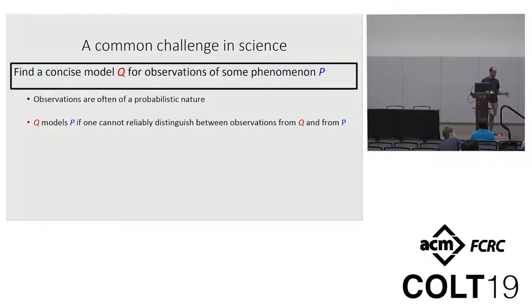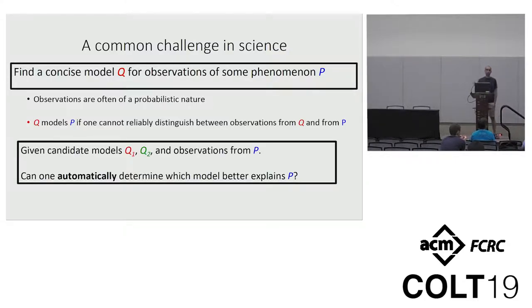So here's some high-level motivation. Many scientific tasks boil down to the following meta-task where we have some phenomenon P we want to model, and our goal is to find some concise mathematical model that models observations from P. In many contexts, observations are randomized, drawn from some random source. So let us informally define that Q models P if one cannot reliably distinguish between observations from P and Q.